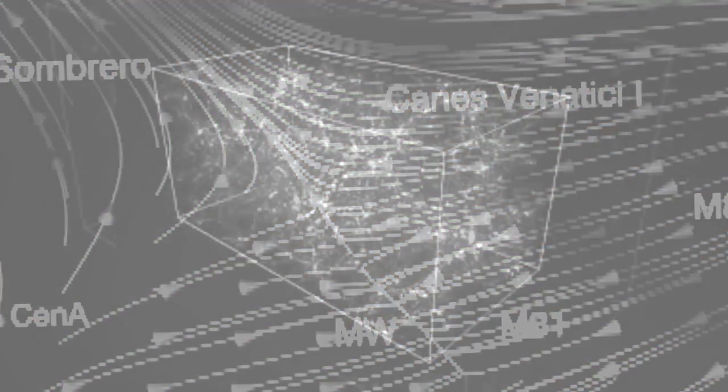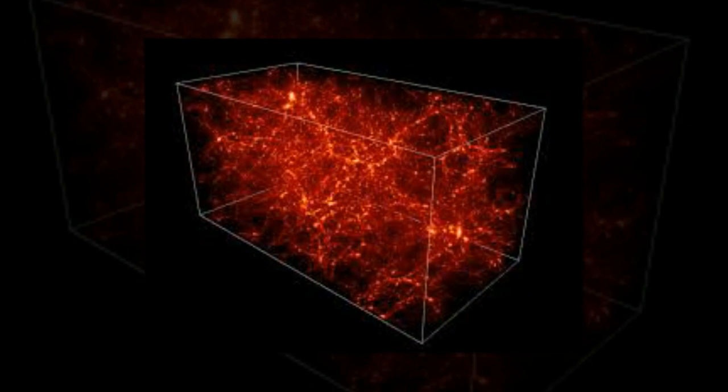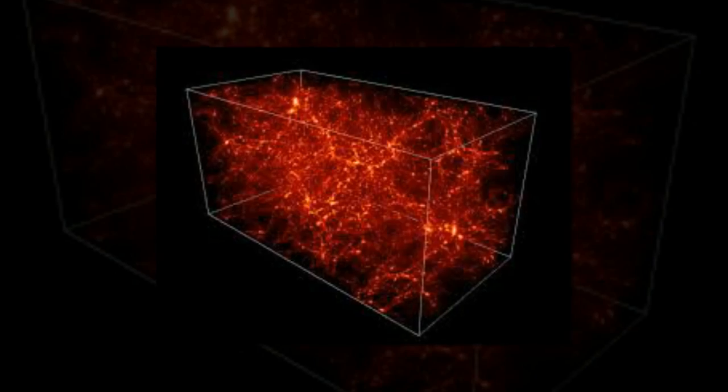This cosmic superhighway gives the speeding satellites an off-ramp along which they can be beamed towards the Milky Way, Andromeda, and Centaurus A.